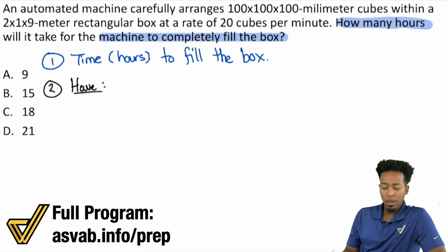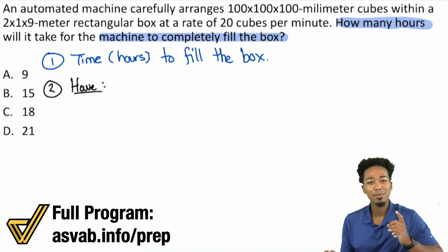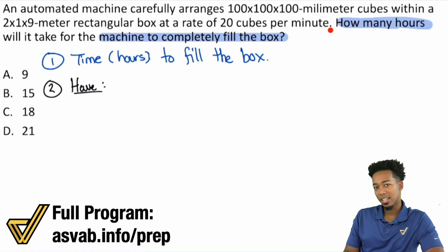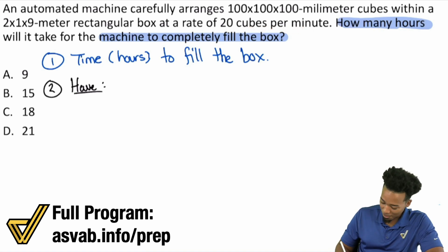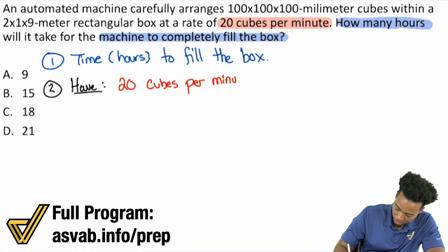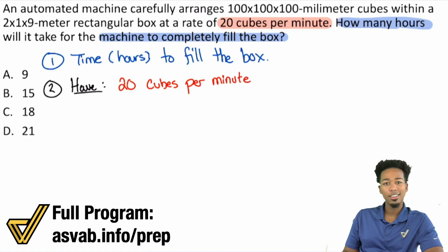This seems complicated, right? Because you have millimeters, then meters, then cubes per minute. What's going on? But there's something very clear here that gives it away, and that is cubes per minute. What kind of unit is that? That's a rate. This is a distance, rate, and time word problem because it says 20 cubes per minute right there.